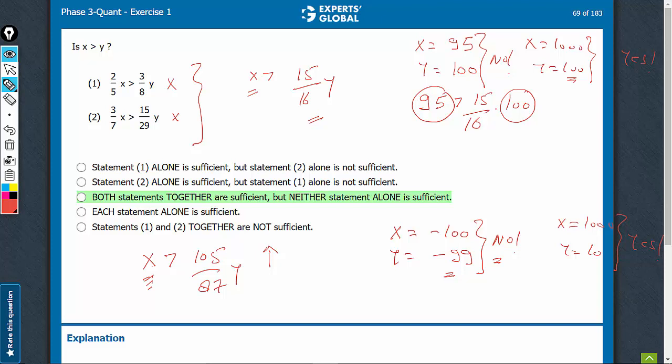On combining we can say that yes, x is definitely greater than y. Whatever exceptions were there, when you combine they will start contradicting each other and you will not be able to get a no. This case would contradict this scenario, and this case of no will contradict this scenario. So you will not be able to get a no as an answer. Only the cases which lead to a yes will remain, and therefore you will only get yes as an answer.